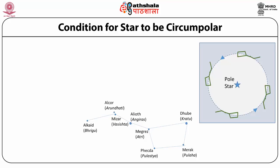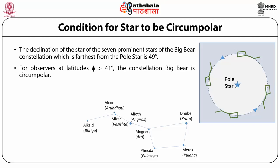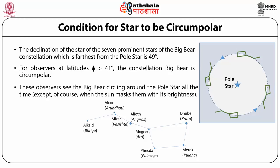Let us consider the example of the constellation Big Bear, called Saptha Rishi in Hindi. This constellation has seven stars. The star farthest from the pole has a declination of 49°. Using the condition for circumpolar stars — that the declination must be greater than 90° minus the observer's latitude — we obtain that the observer's latitude must be greater than 41° for this constellation to be circumpolar. Observers at latitude 41° or higher see the Big Bear circling around the pole all the time, except when the Sun masks it with its brightness.